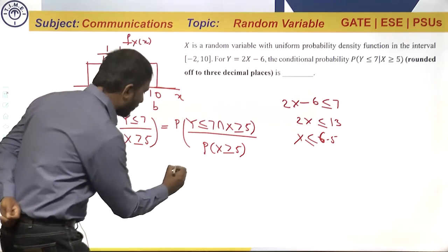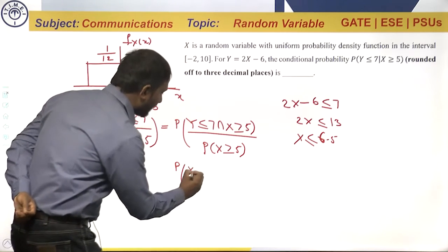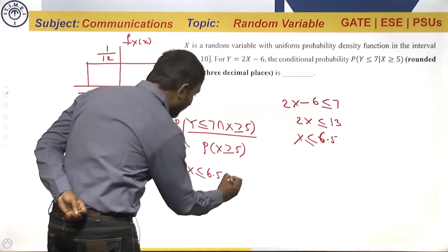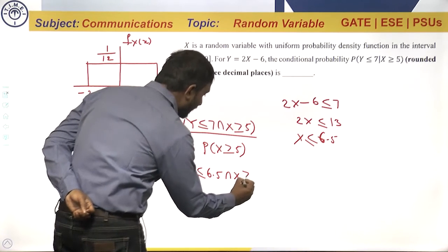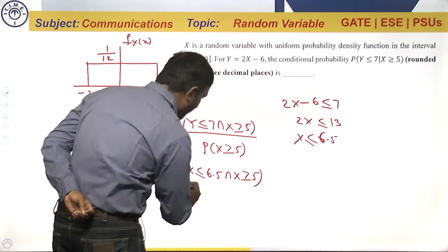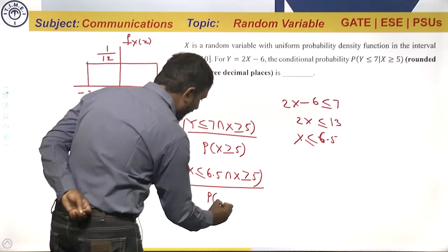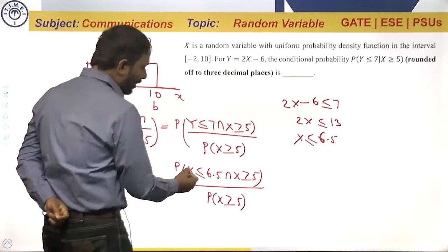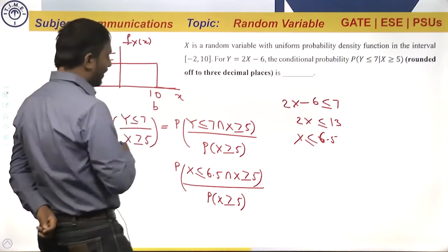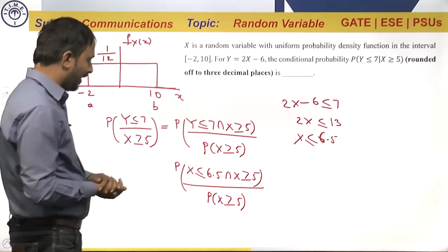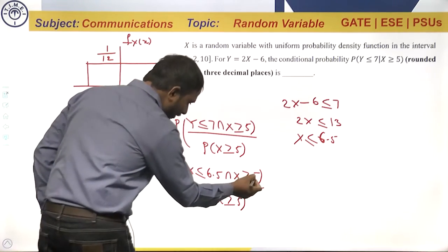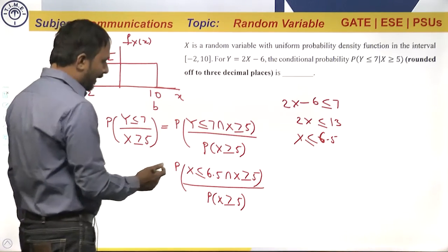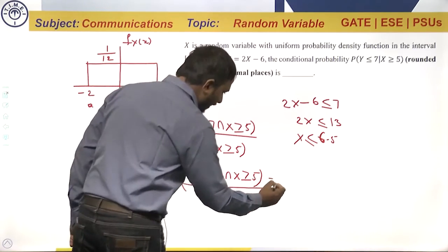This simplifies to probability of x less than or equal to 6.5 intersection x greater than or equal to 5, divided by probability of x greater than or equal to 5. To find the probability from the probability density function, we simply calculate the area. x between 5 and 6.5 means we want the area from 5 to 6.5.